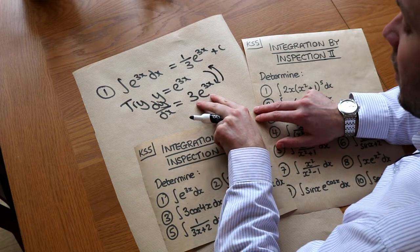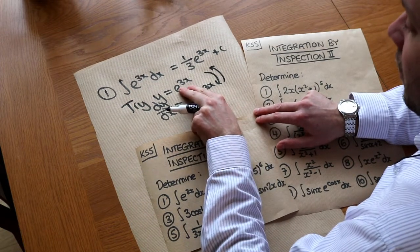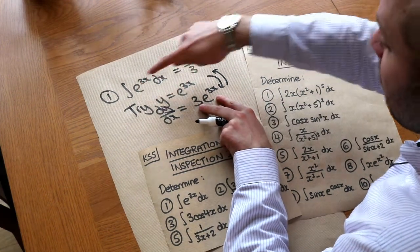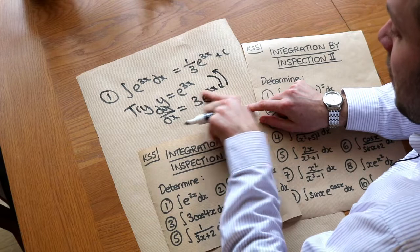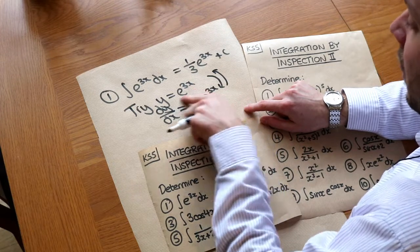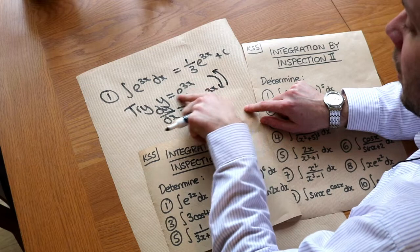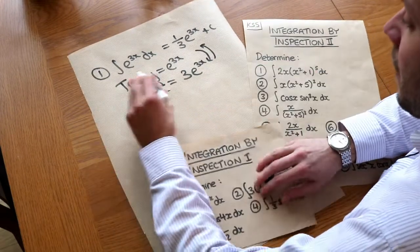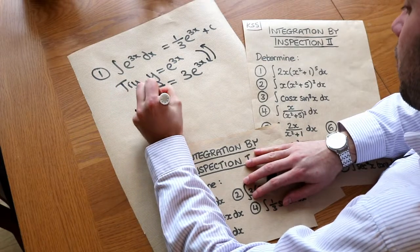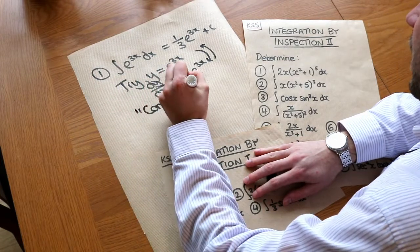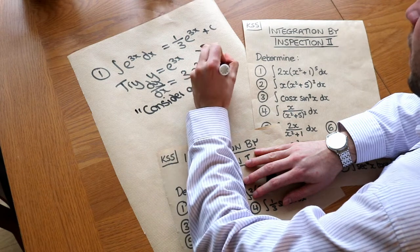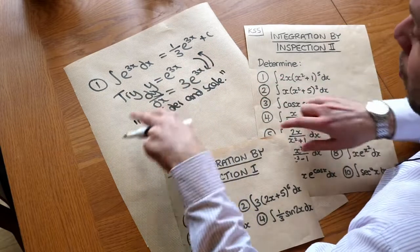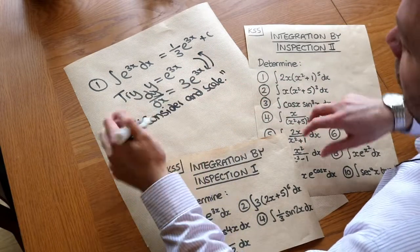If this differentiates to give this, then this will integrate to give this expression. So integrating 3e to the 3x will give e to the 3x, but we're not integrating 3e to the 3x — we're integrating e to the 3x. So we need something a third as big, and we end up with a third e to the 3x. I call this method 'consider and scale' — you consider some expression which might differentiate to this, then scale accordingly.